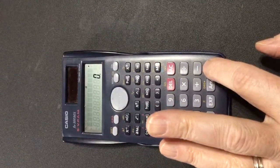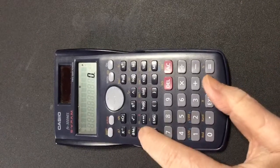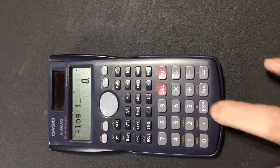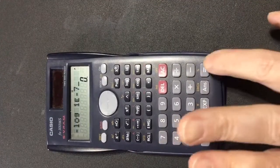This is subtraction. This is where kids mess this up all the time. So you do negative log 1 exponent, negative 7 equals.